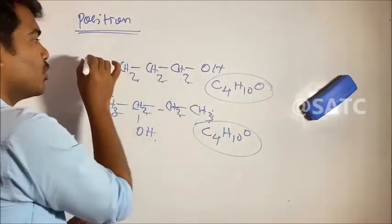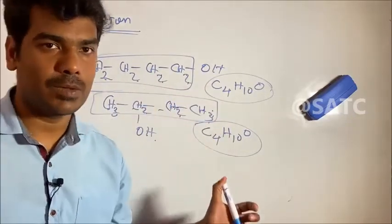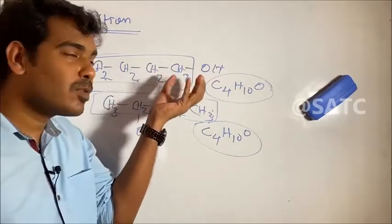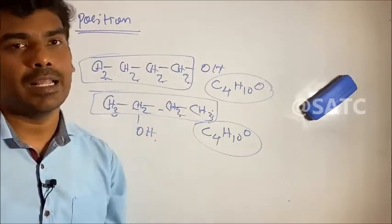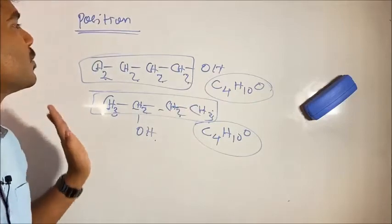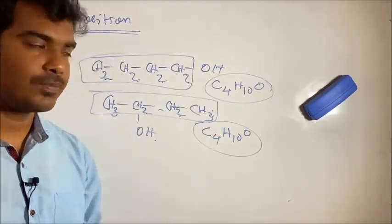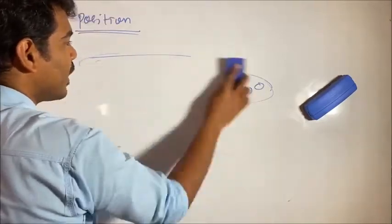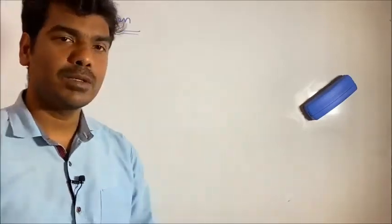But the chain is the same — chains are the same. The OH group is at position 1 in one isomer and position 2 in the other. This is position isomerism. There are 2 main types: chain isomerism and position isomerism. The third type is functional group isomerism.